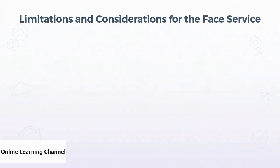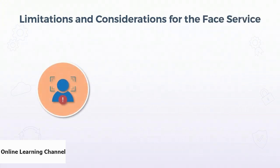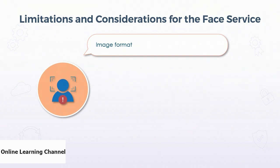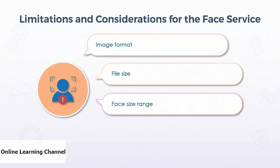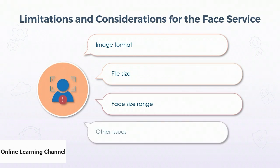When you start using the face service, there are some limitations to consider. Only JPEGs, PNGs, GIFs, and BMP image formats are supported, and image files must be less than 4 megabytes. Faces must be at least 36x36 pixels, and no larger than 4096x4096 pixels — faces outside that range won't be found. Faces at extreme angles or blocked by things like large glasses, hats, or hands may not be found either. Your best bet is always a straight-on, well-lit, unobstructed image.